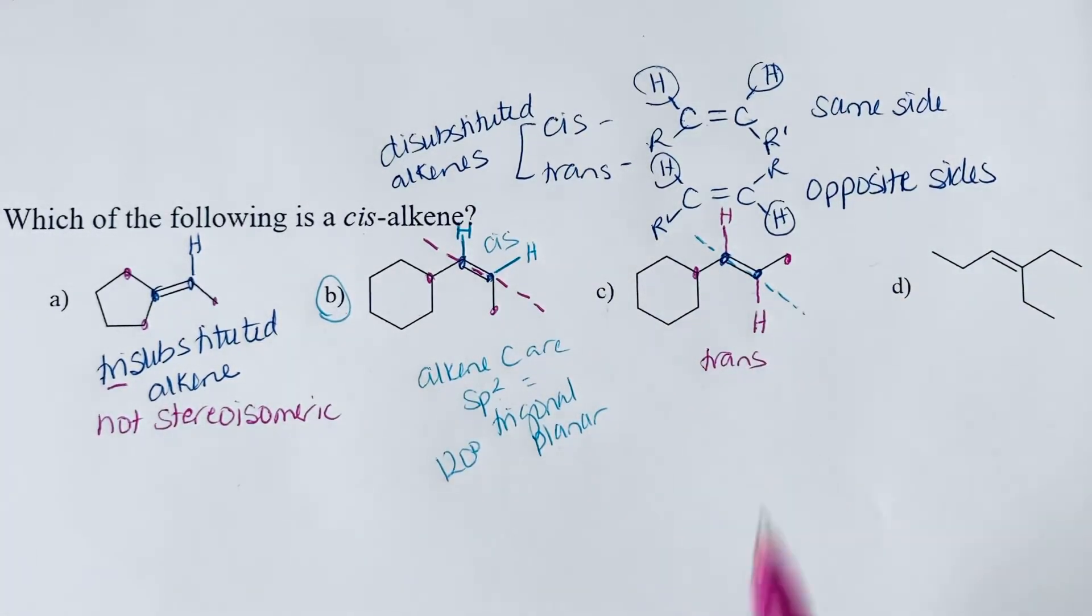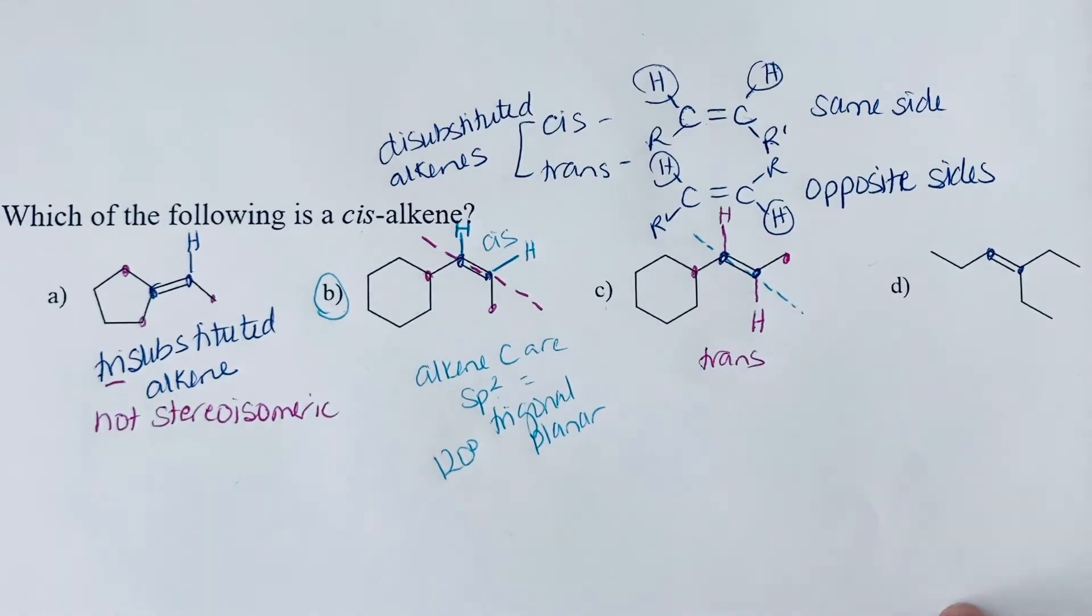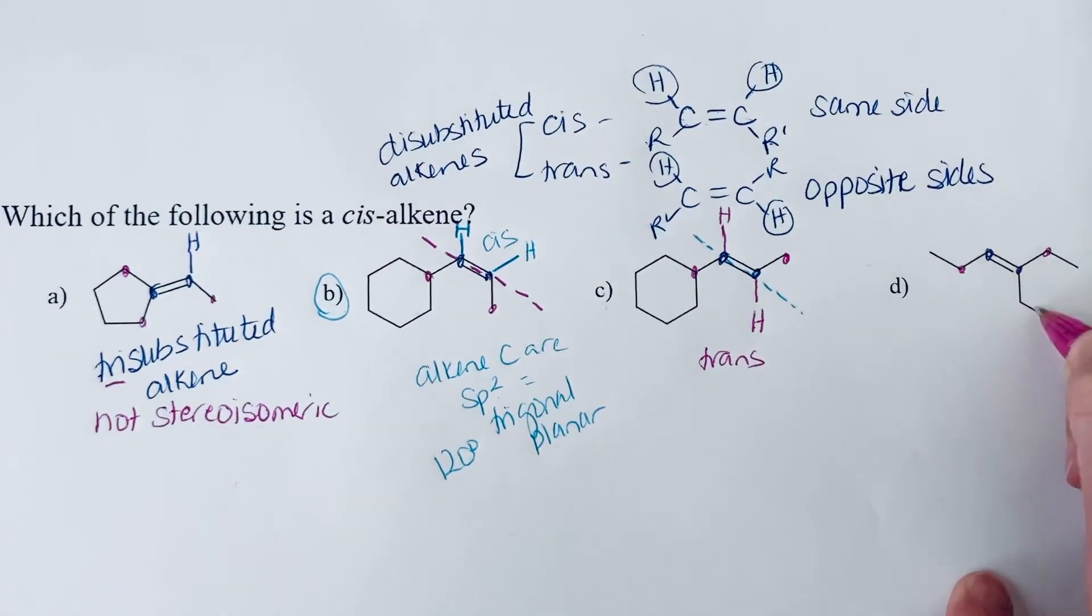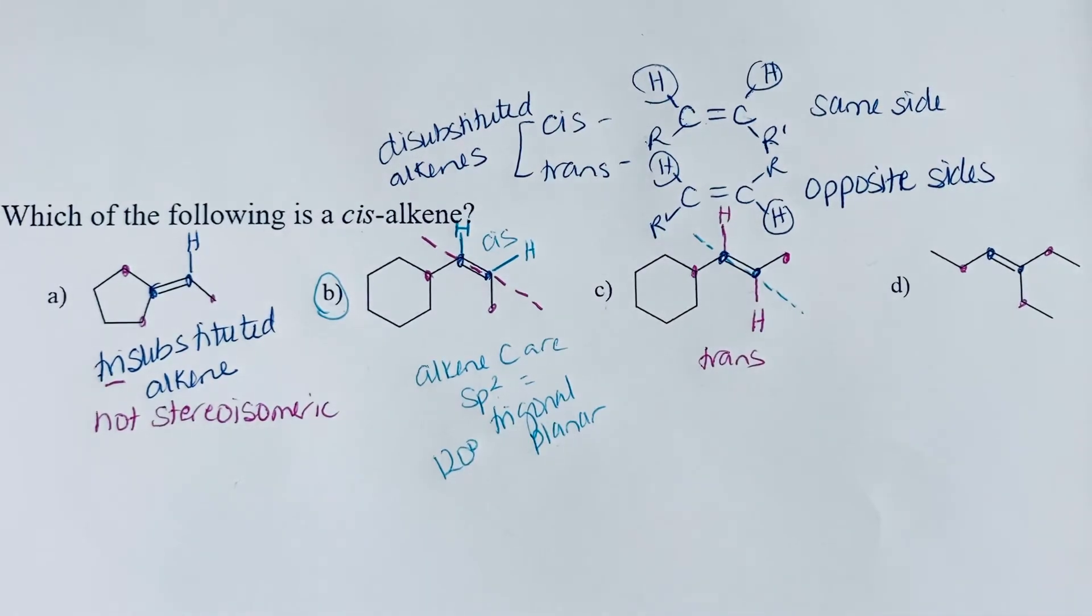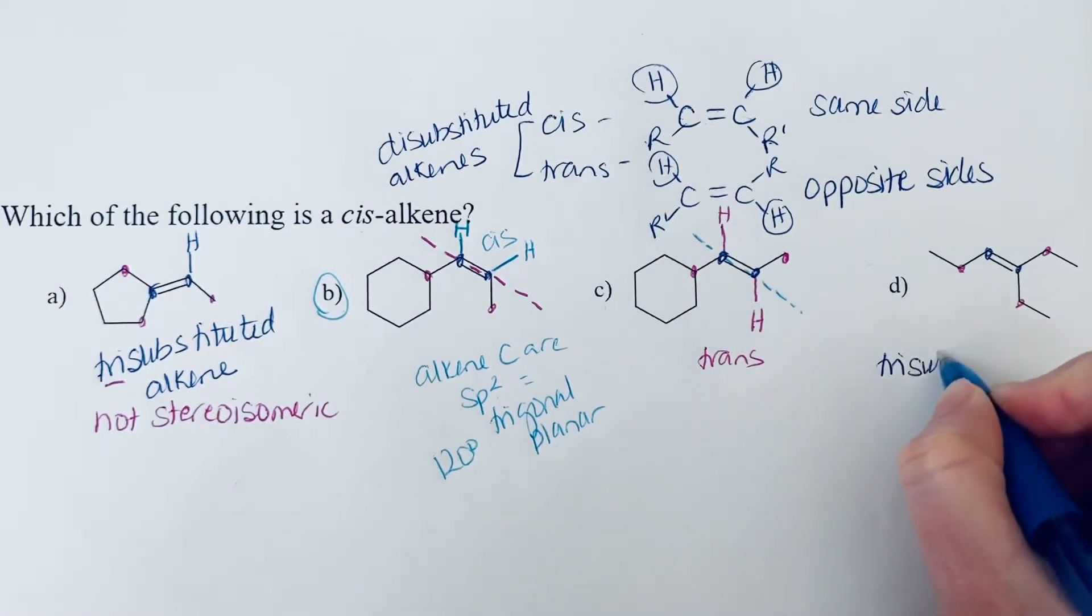Okay. So that's definitely not a cis-alkene. And then if we look at D, D is similar to A. So we have those alkene carbons, one, two, three substituents. So this is again a tri-substituted alkene.